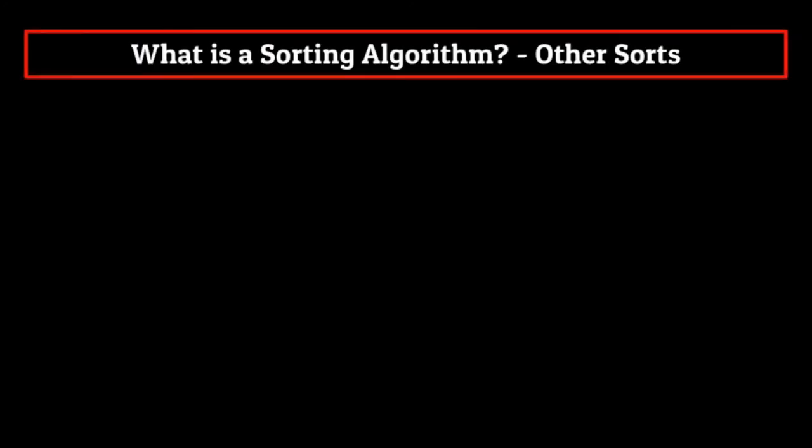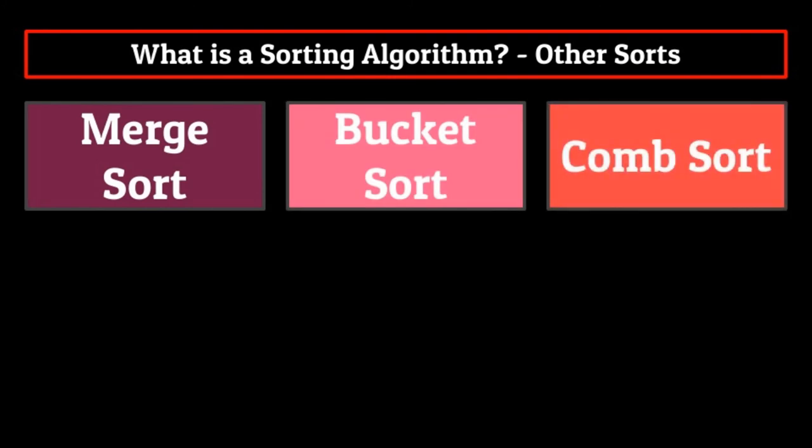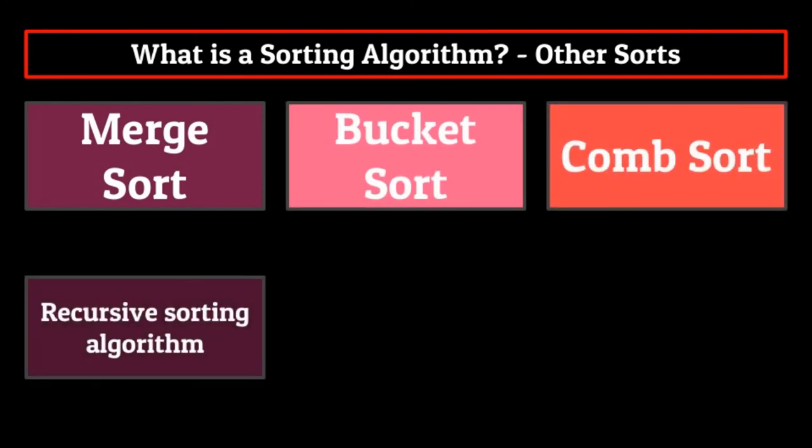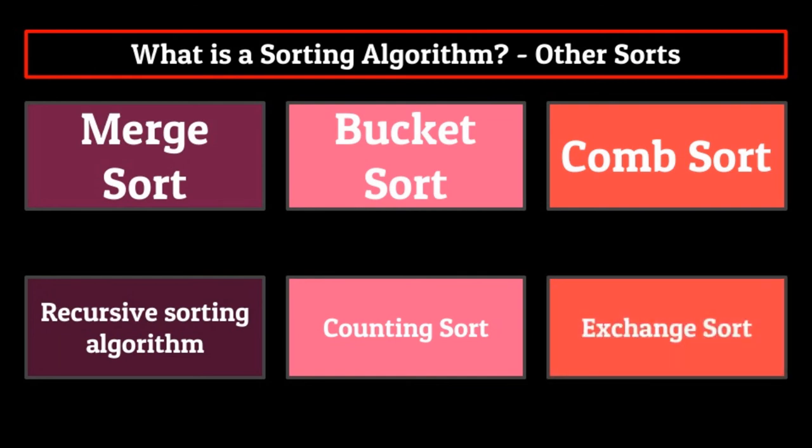The last three algorithms we'll talk about are neither comparison or insertion sorts, but can still be useful in computer science. They are merge sort, bucket sort, and comb sort. Merge sort is a recursive sorting algorithm which breaks the list down into smaller and smaller parts and then slowly builds it back up to be sorted. Bucket sort is a counting sort which takes advantage of lists with similar deviations between elements to pre sort lists of elements into buckets. And finally, comb sort is an exchange sort which repeatedly swaps pairs of items in a set of data.